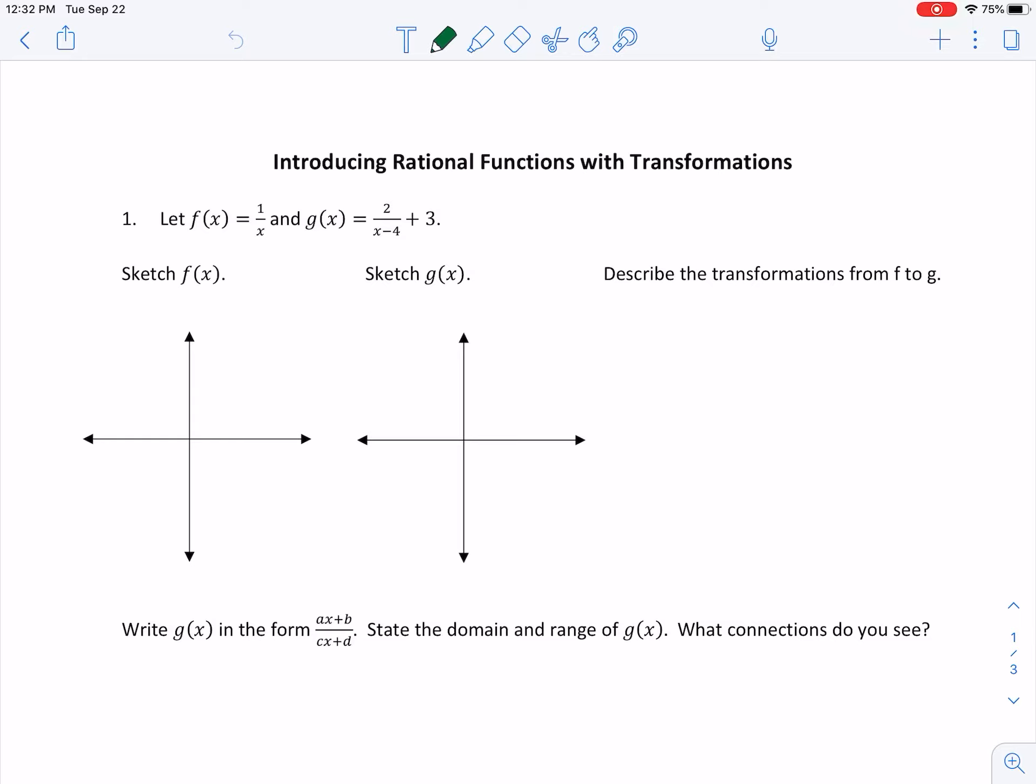Okay, so here goes nothing. To begin with, they're asking us to sketch the parent function, which is 1 over x, and it's going to look something like this. It's going to have asymptotes at y equals 0 and an asymptote at x equals 0. Make sure when you're writing an asymptote that you always tell me what it equals, because if you just said the asymptotes at 0, I don't know what you're talking about.